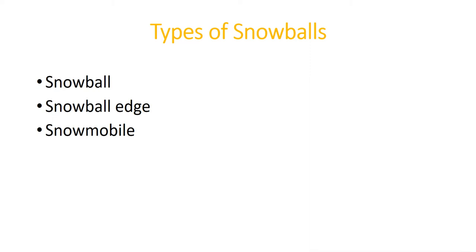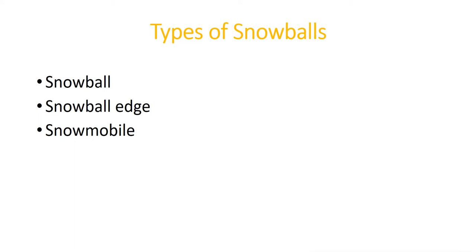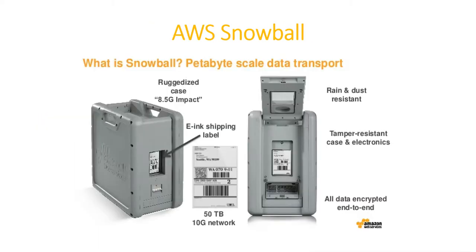There are basically three types of Snowball: Snowball Standard, Snowball Edge, and Snowmobile. For Snowball Standard, on your request AWS will ship the device — this appliance — to you. You can transfer your data to this device and send it back to AWS, and AWS will copy data from this device to the cloud. Once they've copied it, they'll clear the device and reuse it.